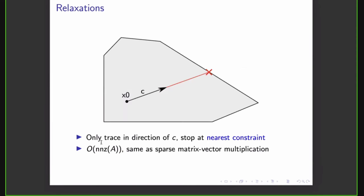However, we can make our job a little bit easier by employing a number of so-called relaxations. So instead of looking for the optimal point on this diagram, it would be the rightmost extreme point, we can instead just accept whichever, we can trace in the direction of a starting point in the direction of the objective function, and just pick whichever constraint we encounter first. And this can be computed using two sparse matrix vector multiplications, so it's cheap to compute.